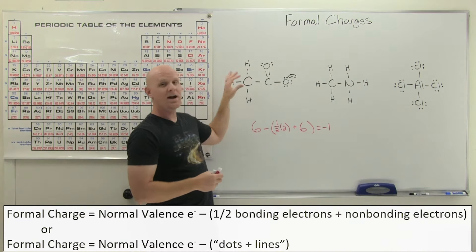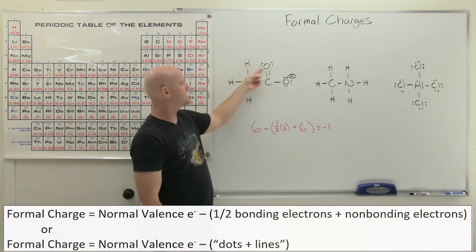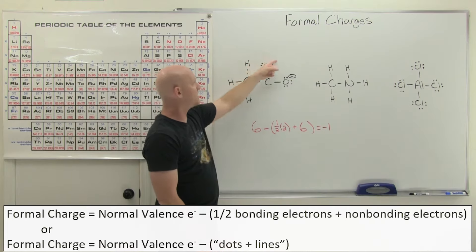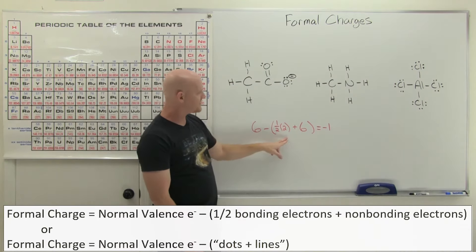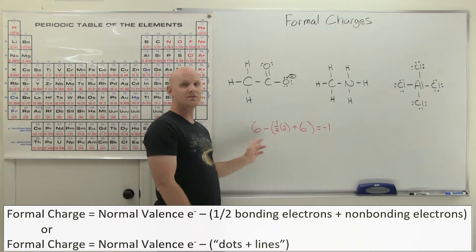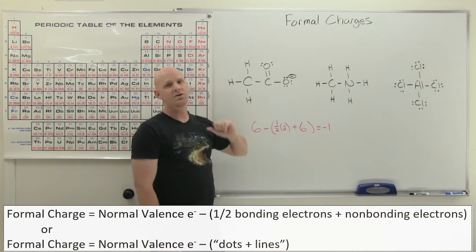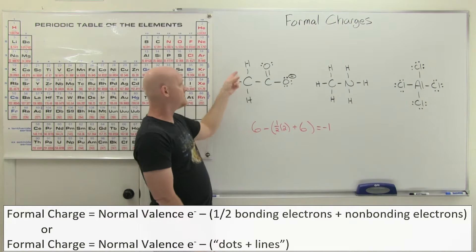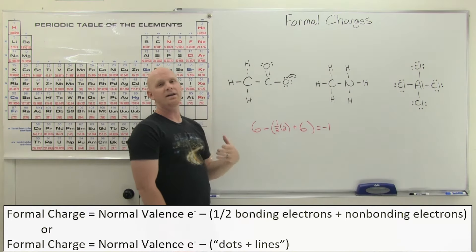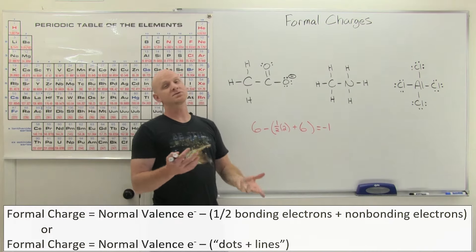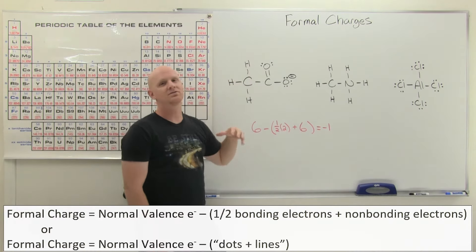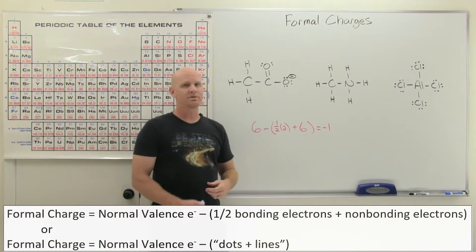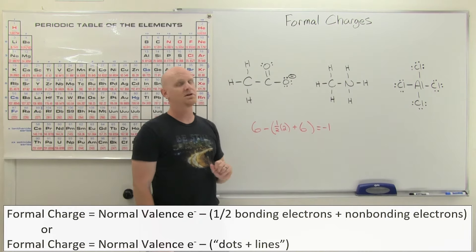None of the other atoms here have a formal charge. The other oxygen would be six minus half of four bonding electrons, which is two, plus four non-bonding electrons — that's six — and six minus six is zero. Carbon also has no formal charge: its normal valence of four minus half of eight bonding electrons — which is four — gives four minus four equals zero. Any atom making its typical number of bonds will not end up with a formal charge. It's when they have a non-typical number of bonds that you should expect one.